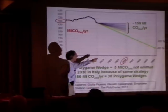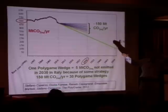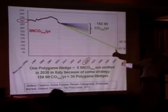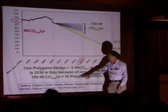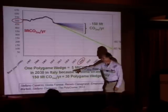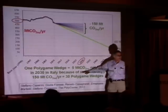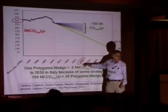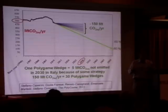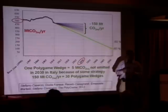Your job is to fill the same triangle — but for Italy, with a different baseline and goal — using 30 wedges defined to be much smaller than the global ones. Your wedges reduce emissions by five million tons instead of four billion tons — almost a thousand times smaller — but only over 18 years, not 50. So it's a more compressed horizon: 18 years, much smaller wedge, but specifically for Italy.